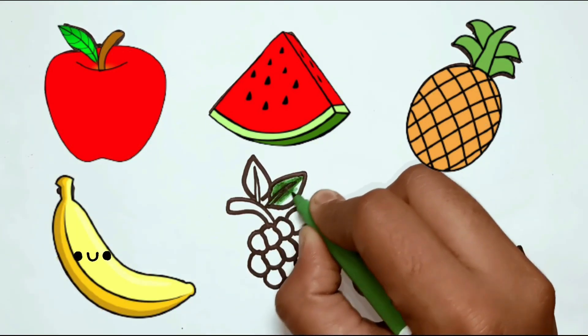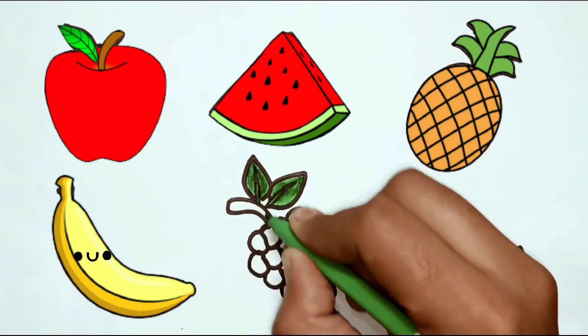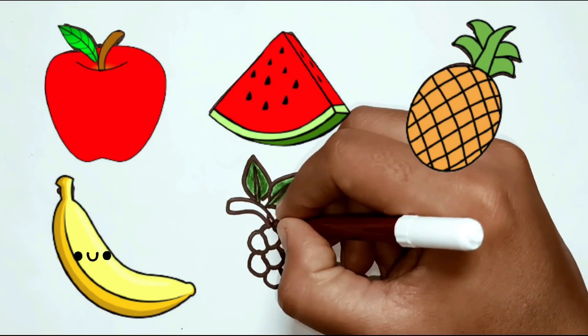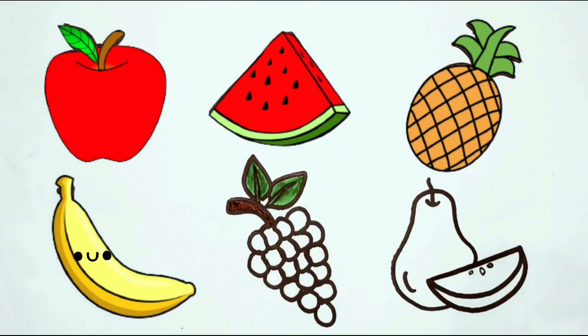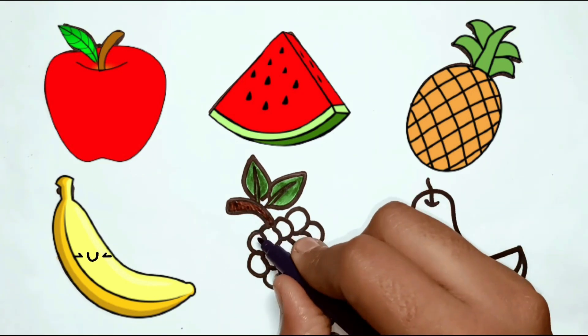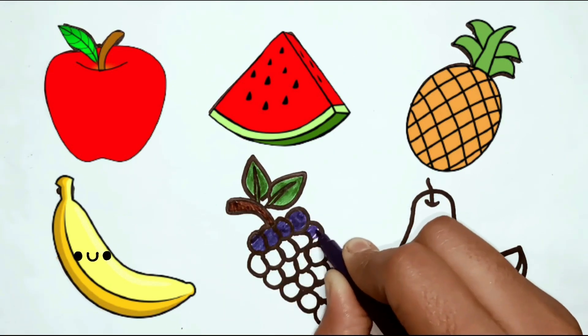What is this? Grape. Grape is green. We have done grapes in purple.